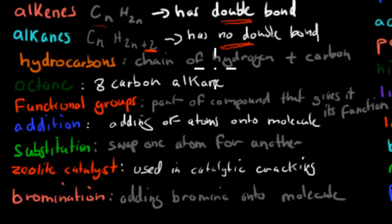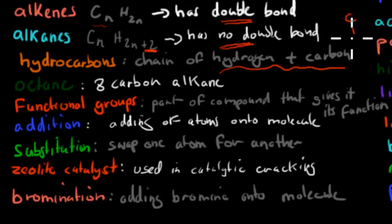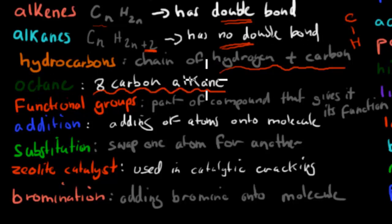Hydrocarbons are just a chain of hydrogen plus carbons. If you have C and Hs all over the place, that's your hydrocarbons. Octane is used for fuel and it's an 8-carbon alkane, so it has no double bonds and it has 8 carbons in its chain.